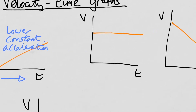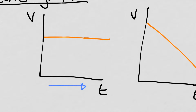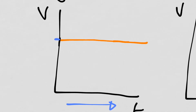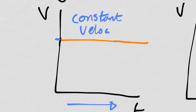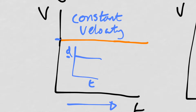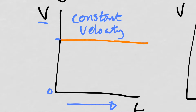In this graph, as time goes on velocity does not change. This indicates that it's moving at a constant velocity. This is what's going to confuse a lot of people — in the last video a flat line on a distance-time graph meant the distance wasn't increasing, so the object was stationary. But here the y-axis is velocity, not distance. So the velocity isn't changing and it's not at zero — it has some value, meaning it must be moving. It's just not changing its velocity, so it's constant velocity.